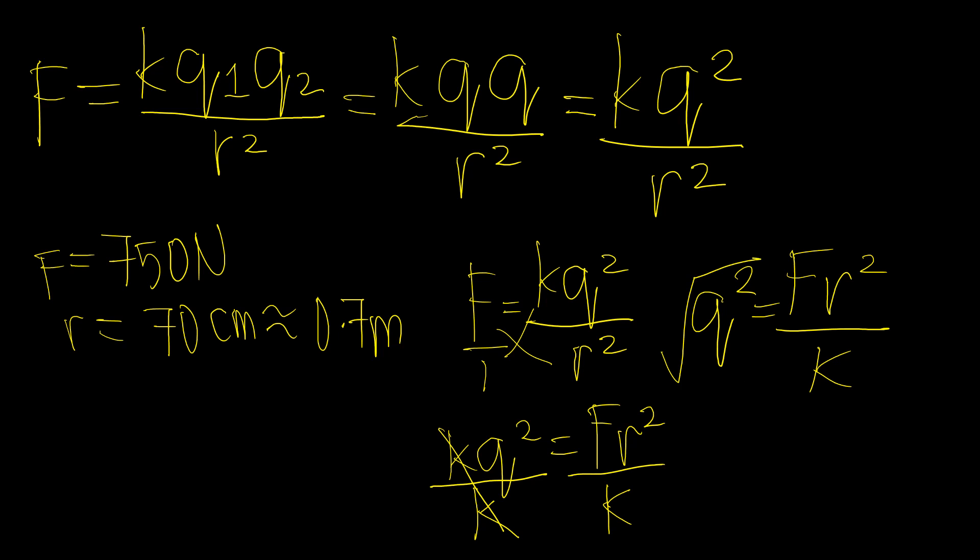we can just get the square root of both sides. So we have Q is equal to the square root of F R squared over K. Okay, so this is our formula.